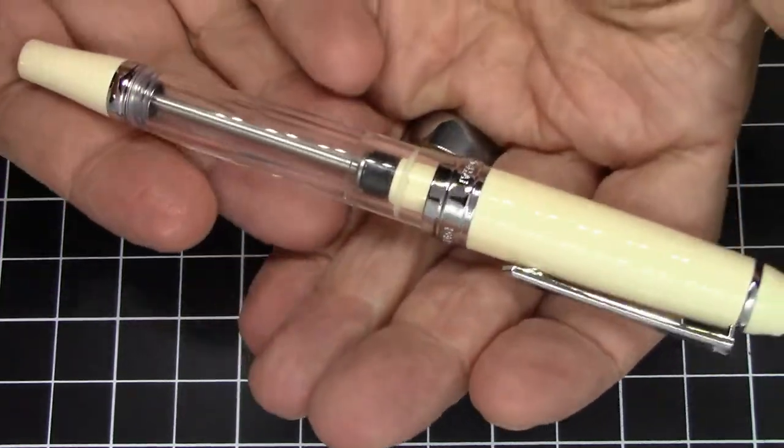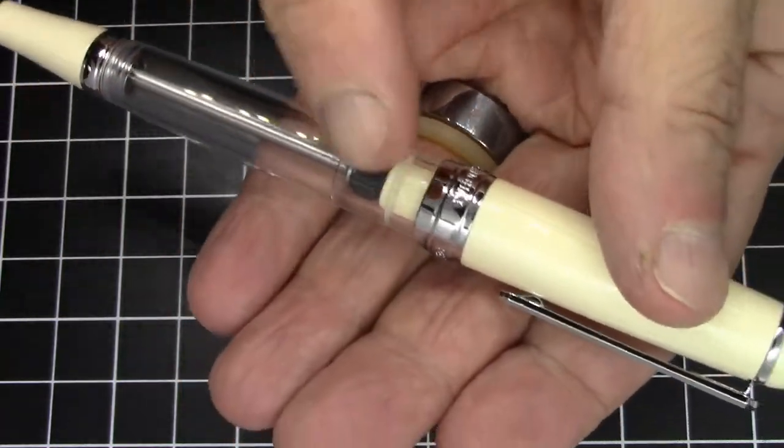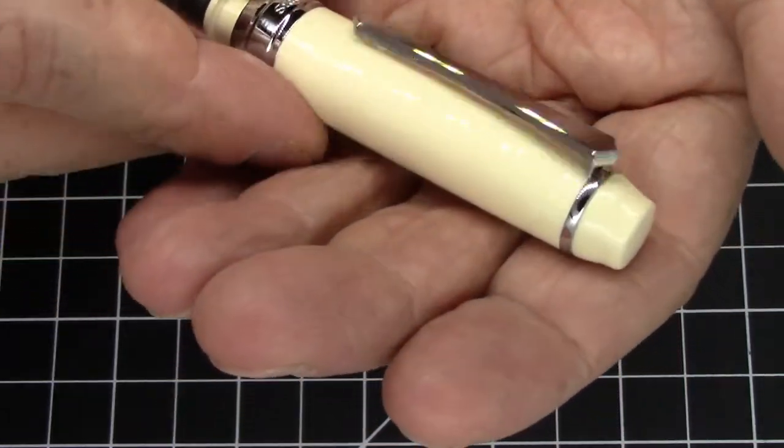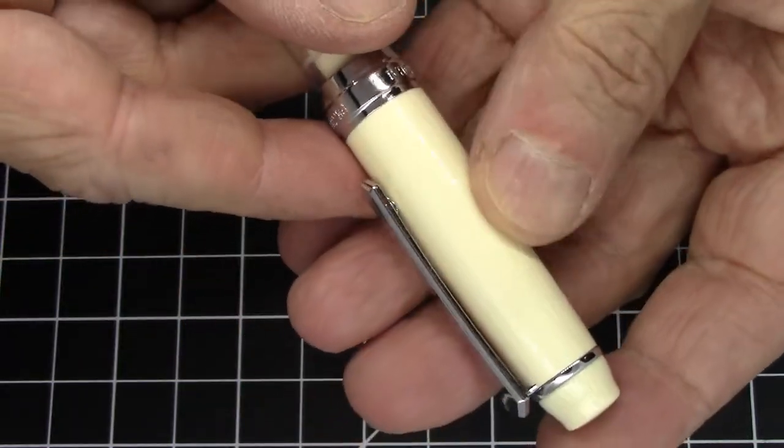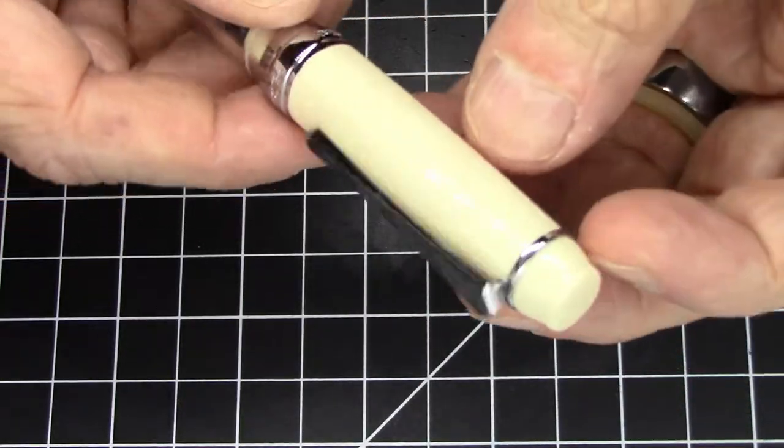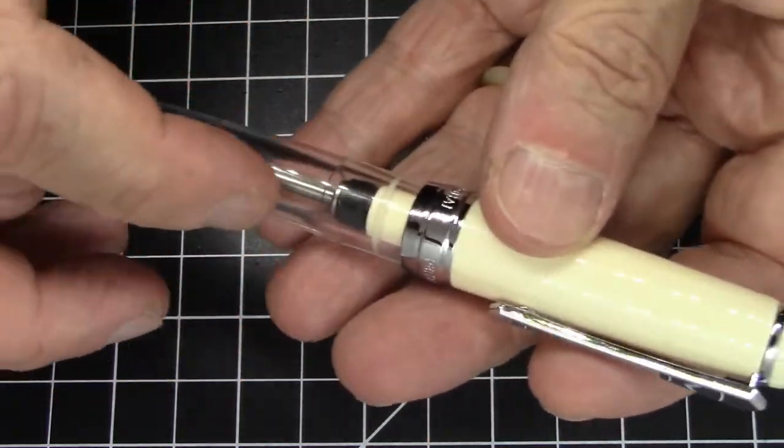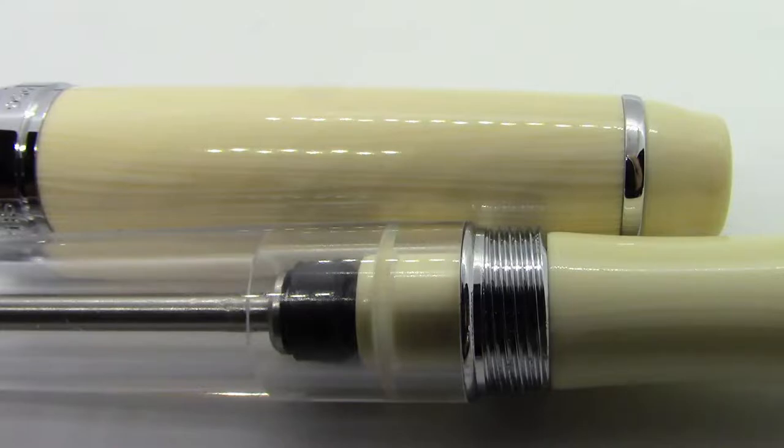The thing I really like about this particular one is the combination of this clear demonstrator with this really cool ivory finish which has this grain in it, which I think just looks really good, sort of like a simulated ivory grain or wood grain. The barrel itself is clear but mostly everything else, really everything else, the vacuum filler turning knob, the section, and the cap is this really nice ivory finish.